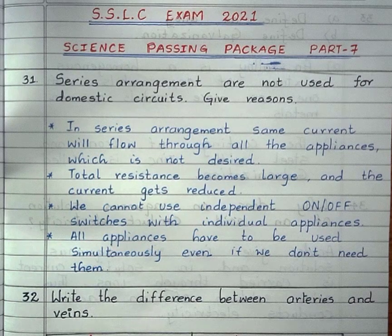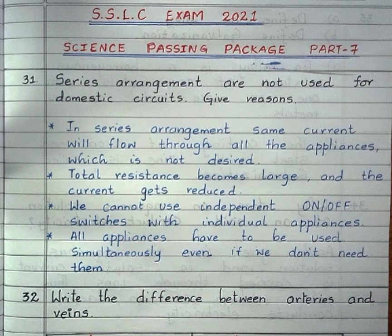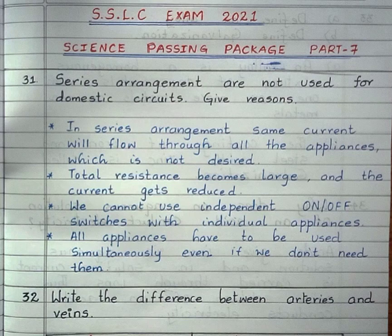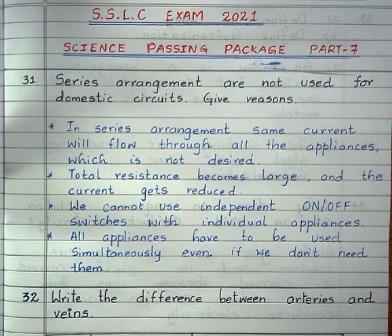Total resistance becomes large and the current gets reduced. Total resistance of the circuit increases, therefore the current will reduce.